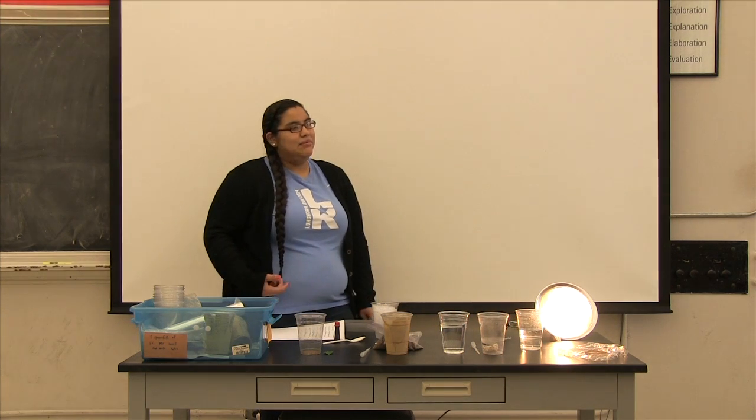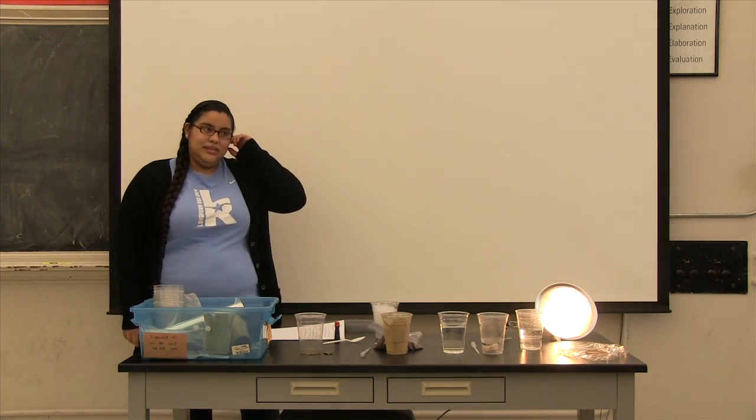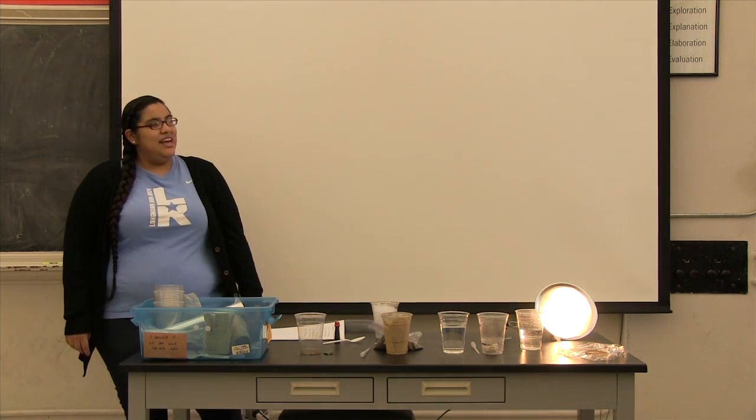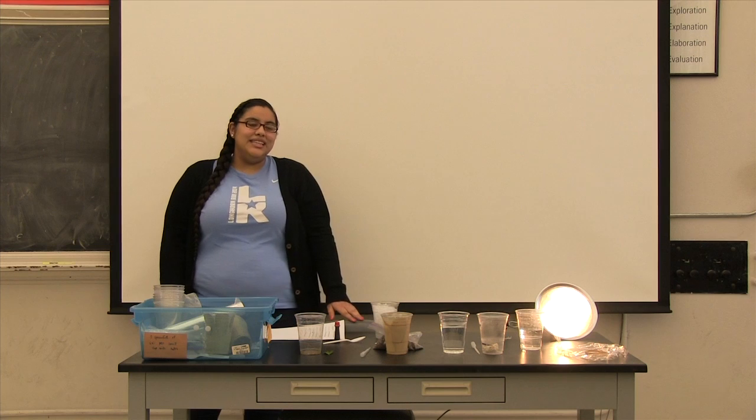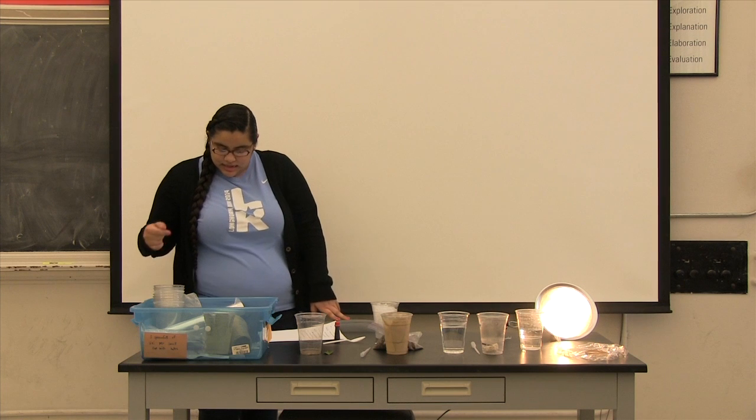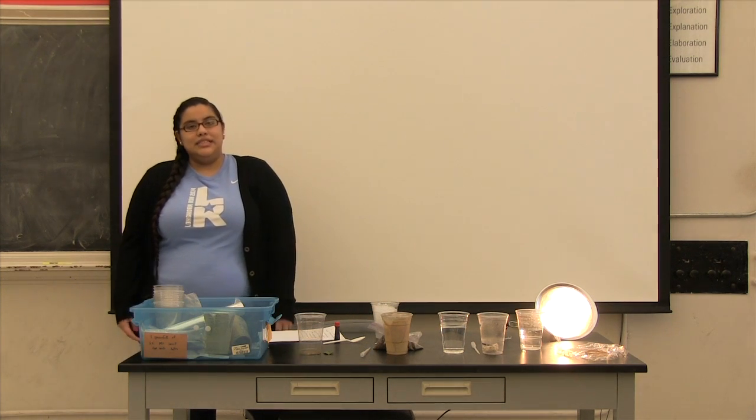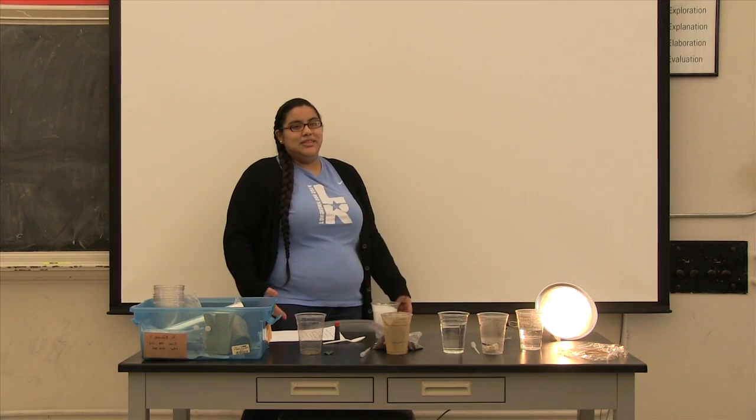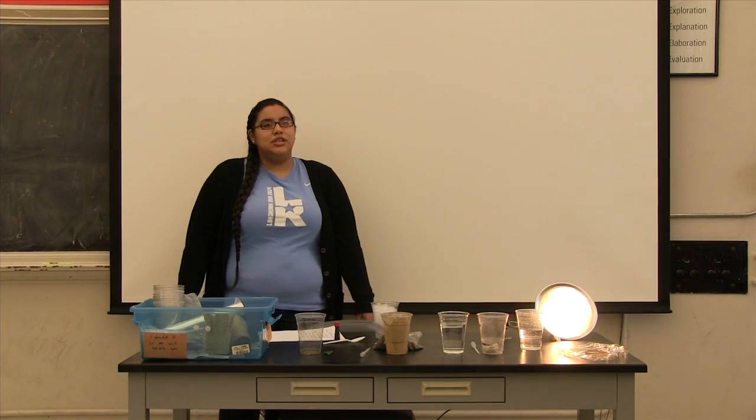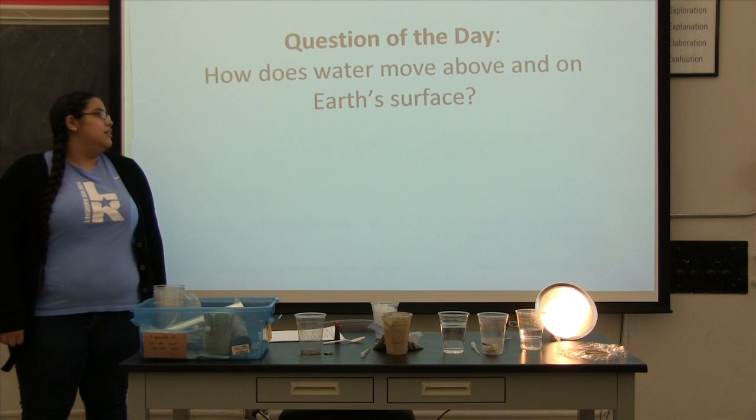We are going to be using a heat lamp today to model the sun. In science, a model is a simplified representation of what we are actually trying to study. The sun can get up to 10,000 degrees Fahrenheit. Our lamp doesn't get that hot. That's why it's called a model. We are going to use models today to try to answer our question: how does water move above and on the Earth's surface?